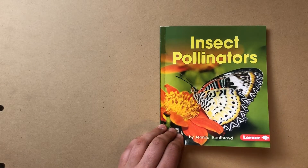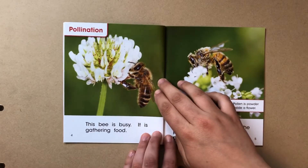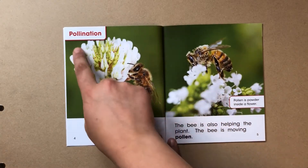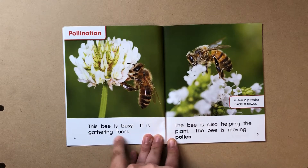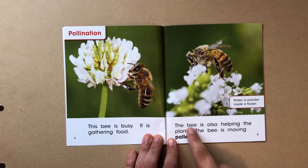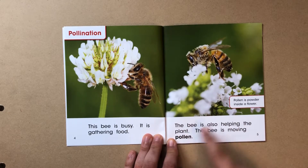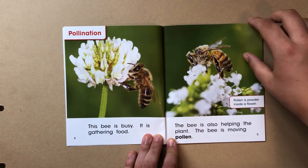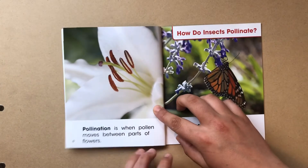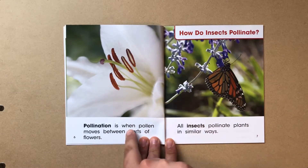Insect Pollinators by Jennifer Boothroyd. Pollination. This bee is busy. It is gathering food. The bee is also helping the plant. The bee is moving pollen. Pollen is a powder inside a flower. Pollination is when the pollen moves between parts of flowers.